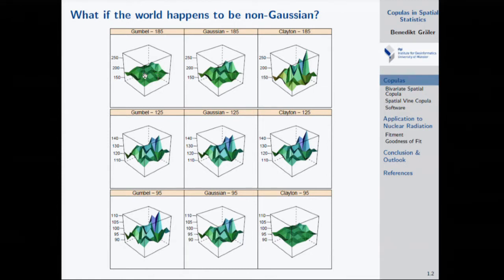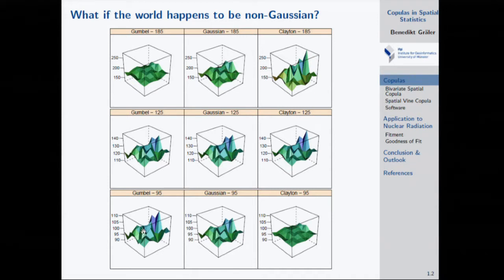If we use a Gumbel dependence structure and observe a very high value, the Gumbel structure assumes everything else is high as well — a high but even, flat surface. It's different for Clayton: when we observe a high value, the Clayton copula says it's high, but there's still huge variability in the field. For low values, it's the other way around: the Gumbel copula allows strong variability for low values, while Clayton assumes if it's low, everything around is also low.